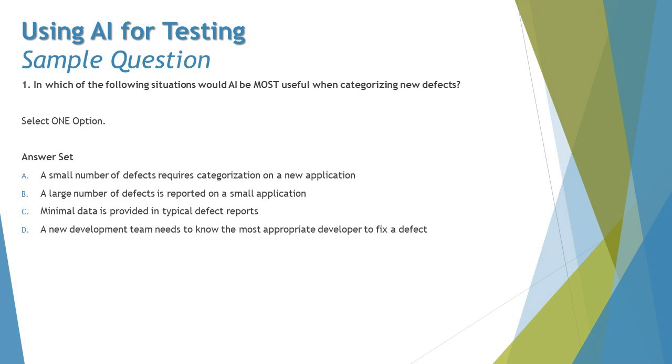This looks a little interesting when we talk about how AI can be most useful in categorizing new defects. Now option C says minimal data is provided in typical defect reports. Now minimal data is a constraint. Where minimal data is provided in defect reports, the usefulness of the tool will be lower as less data will be available to the algorithm.